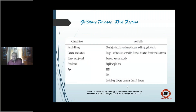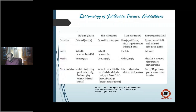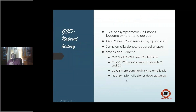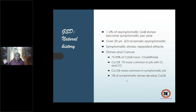Natural history: 1 to 2 percent of asymptomatic gallstones become symptomatic per year. Over 20 years, two-thirds remain asymptomatic — only one-third become symptomatic. So if you have a silent stone today, your chance of having a symptomatic stone is only 33 percent over 20 years. That is why asymptomatic gallstones are generally not advised to be removed, except in certain circumstances.